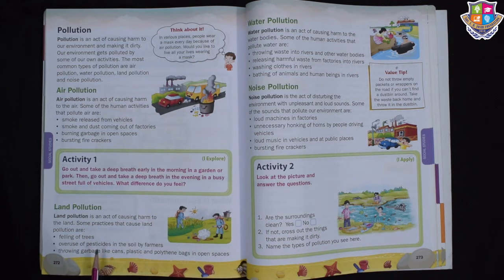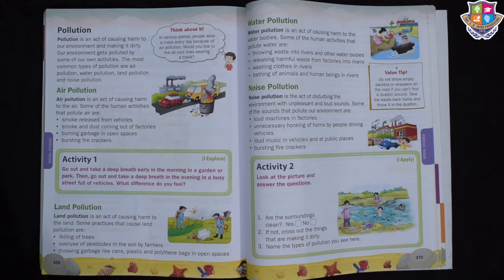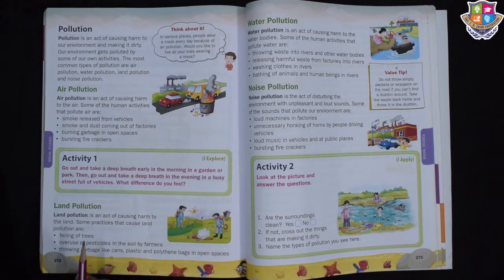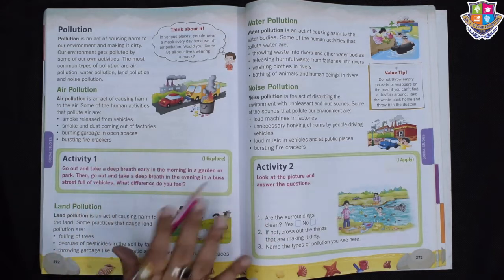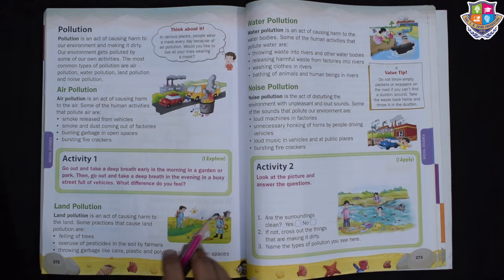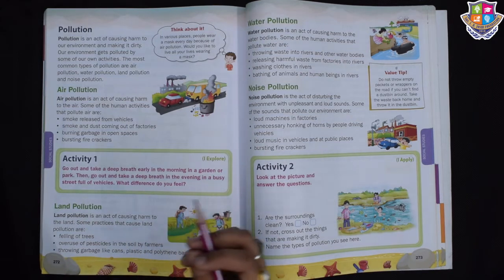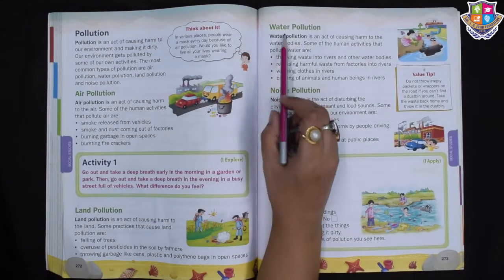We pollute the land by cutting down trees, leaving fallen trees on the land without cleaning, overuse of pesticide chemicals in the soil, and throwing garbage like plastic items, cans, and polythene bags in open spaces. All these make our land look very dirty.